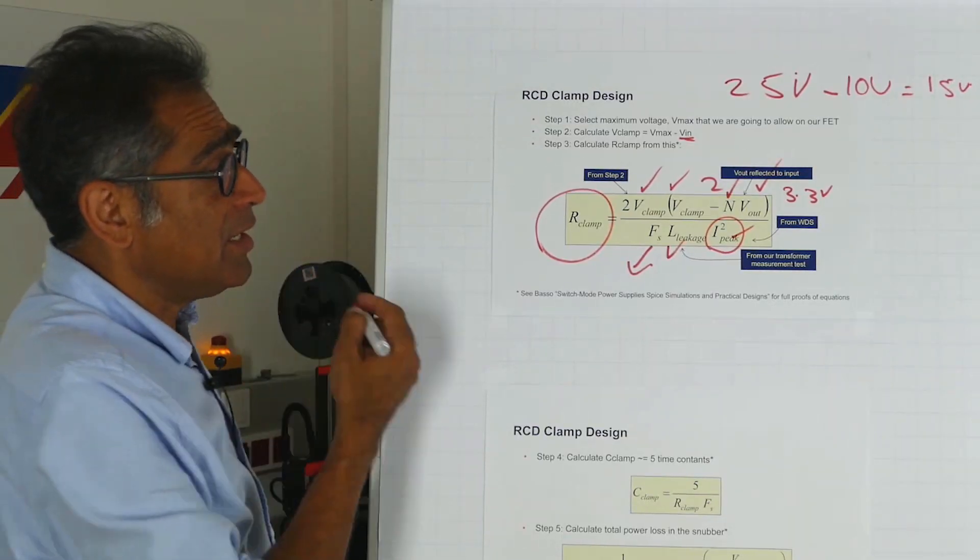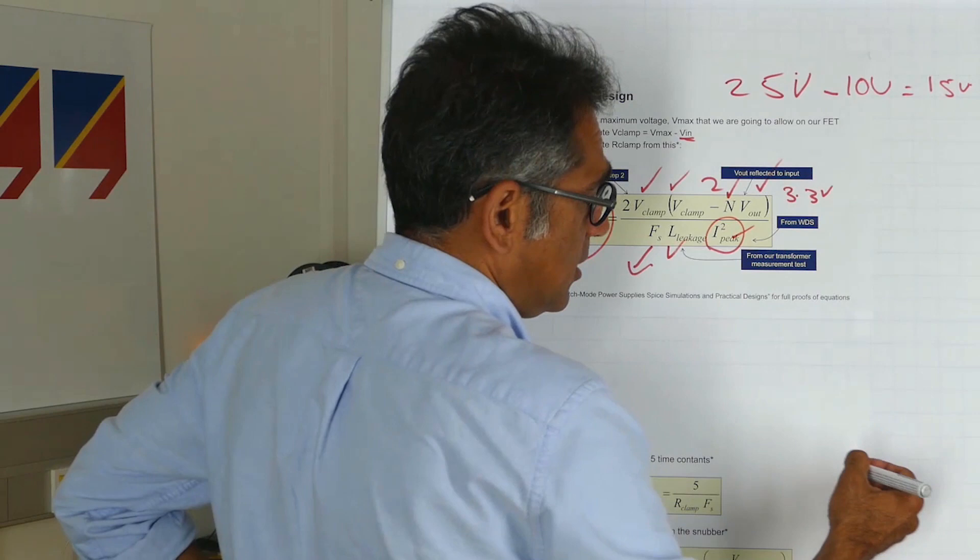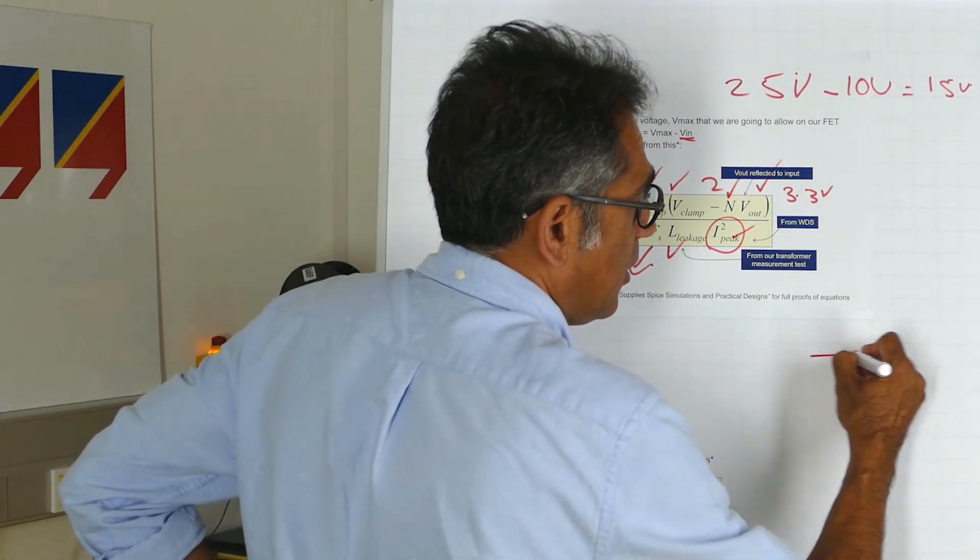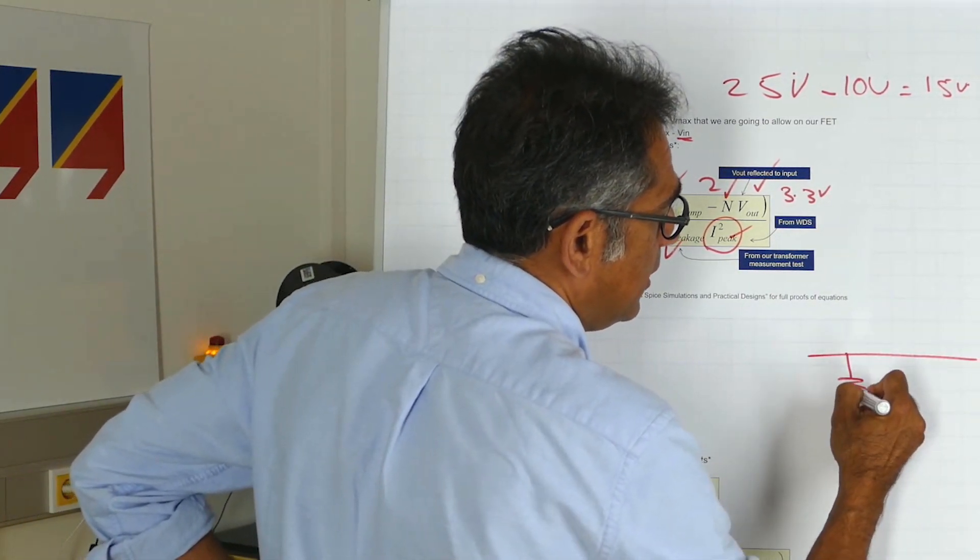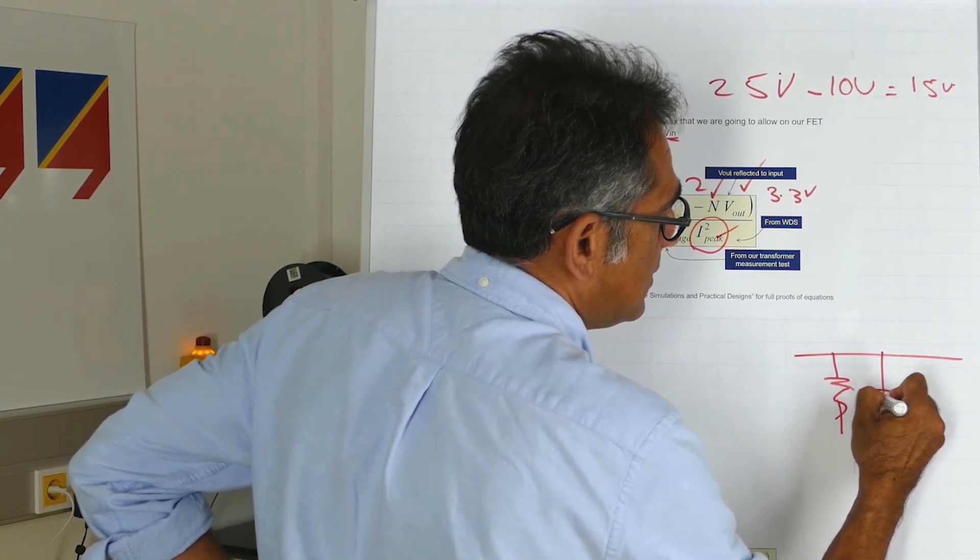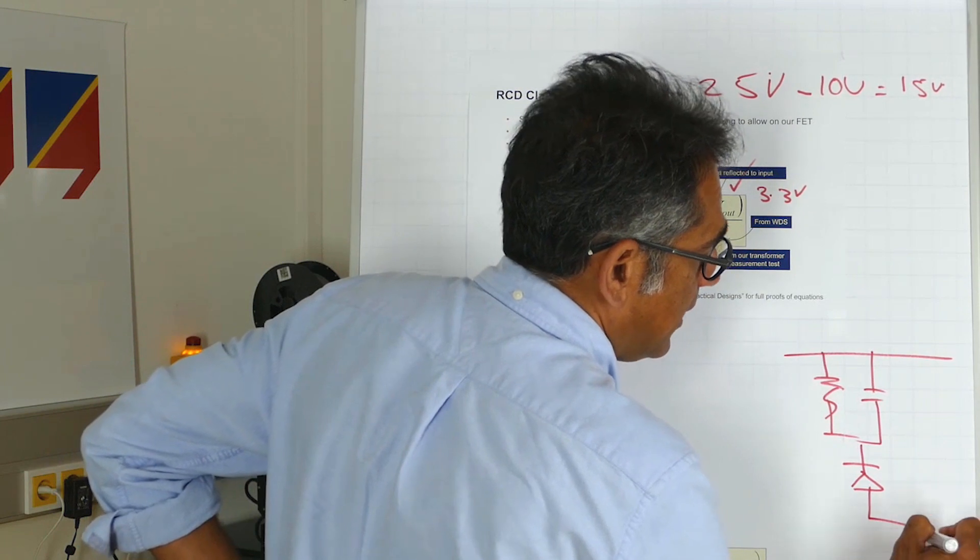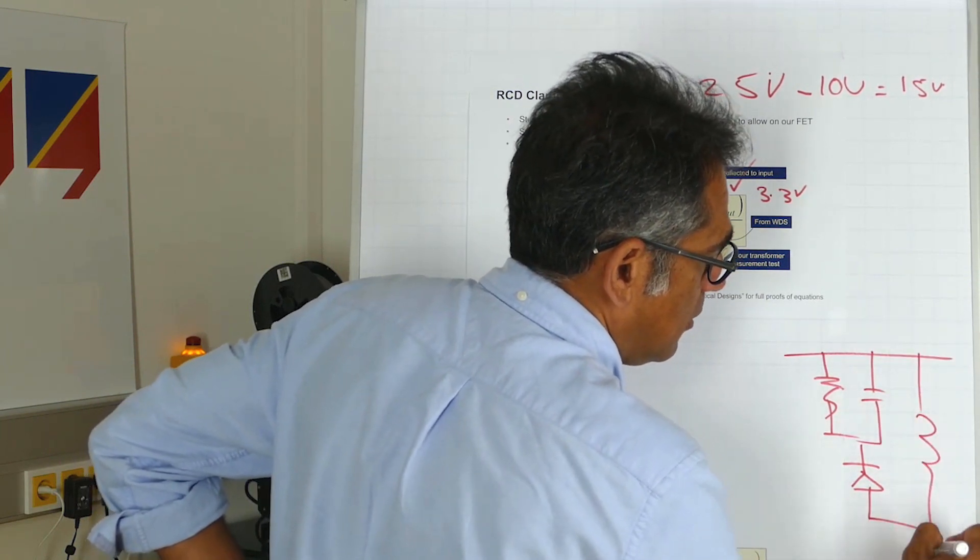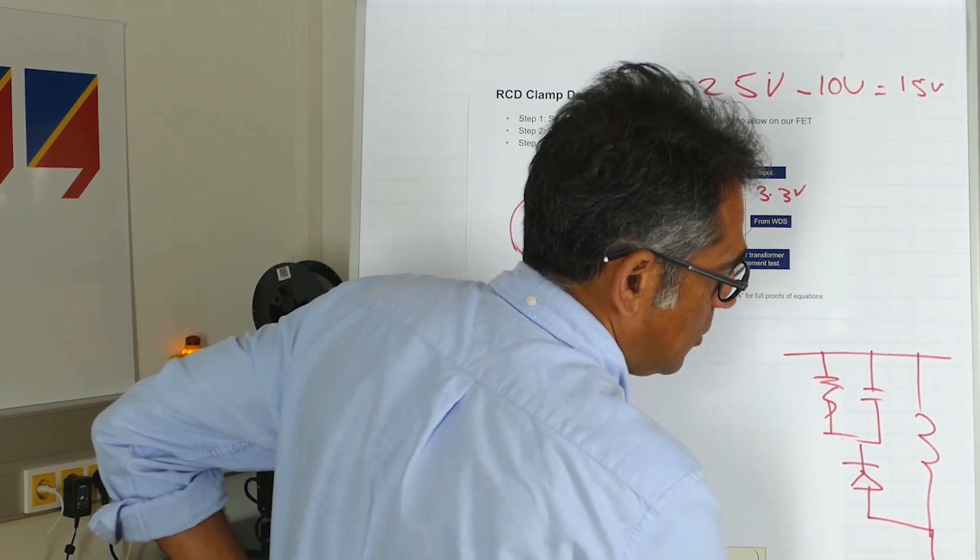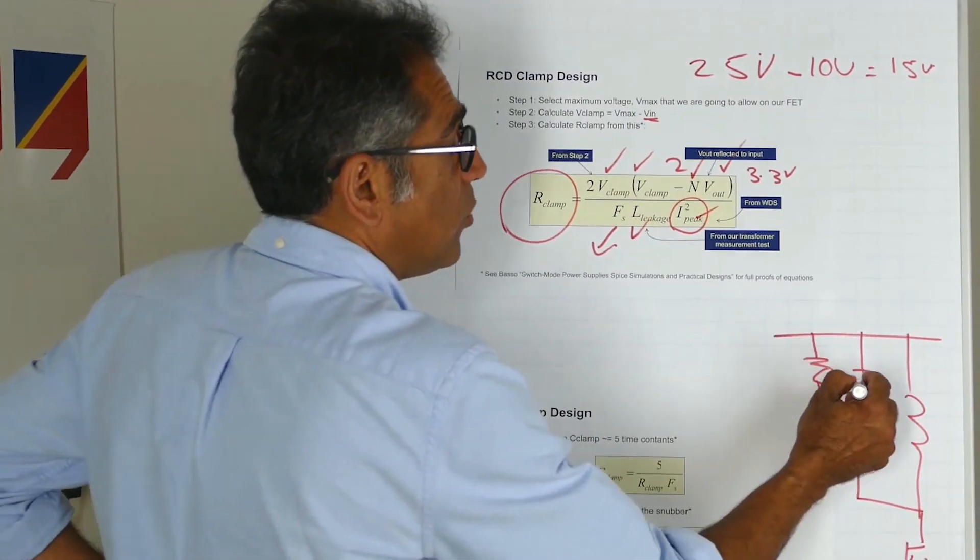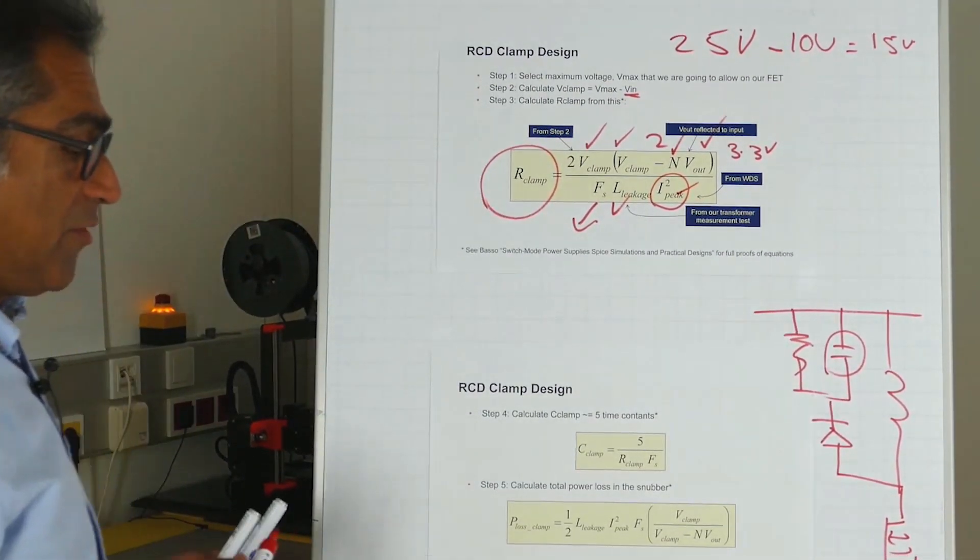Okay. Now if you remember, the circuit looked, let's draw it over here, you had a resistor, you had a capacitor, and you had a diode that went like so to the FET. So we also have to calculate the value of the capacitor.